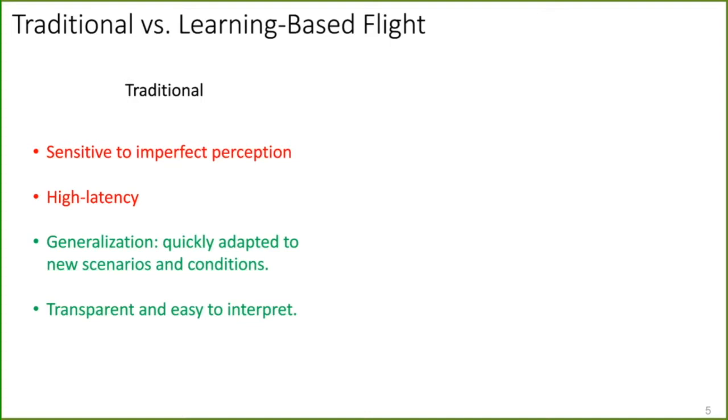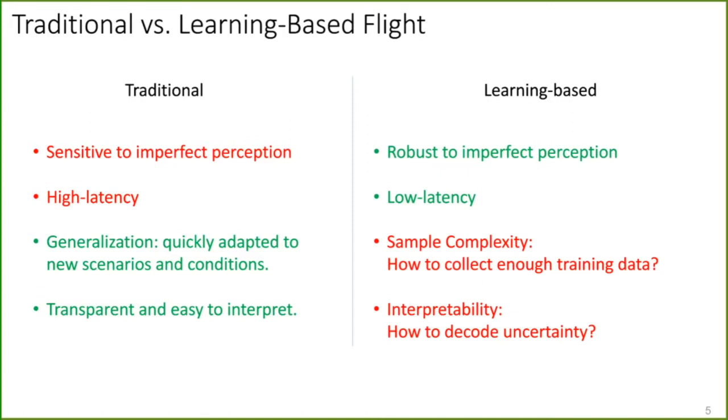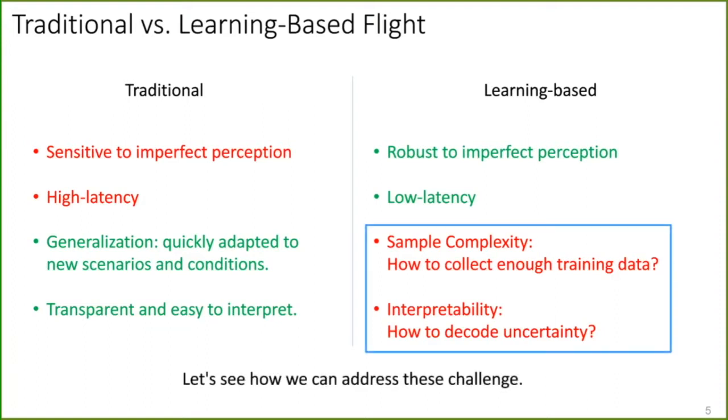The traditional approach is sensitive to imperfect perception and has high latency, but we've seen many successes and a lot of generalization. Basically, these systems can be applied anywhere with little tuning, and they're by design transparent and easy to interpret. On the other hand, learning-based methods are more robust to imperfect perception and have lower latency. However, we have the problem of sample complexity. How can we collect enough training data? And interpretability - how can we decode the uncertainty of neural networks?